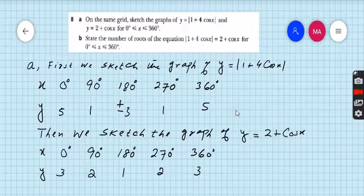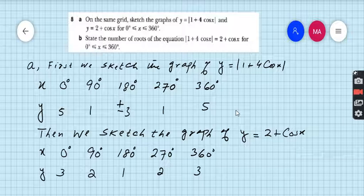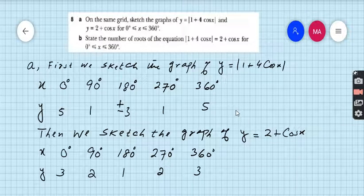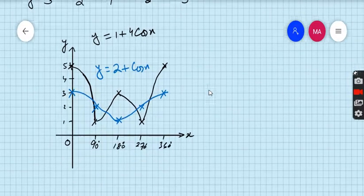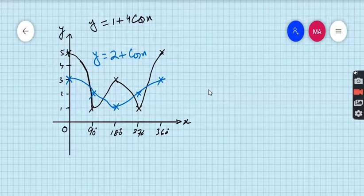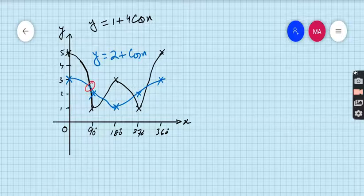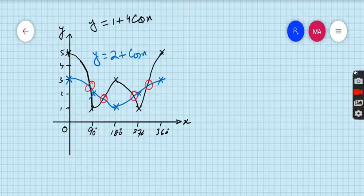What is part b? State the number of roots of the equation 1 plus 4 cos x equals 2 plus cos x for the domain 0 to 360 degrees. So very easy - check at how many points both graphs cut each other. This is the first point, this is the second point, this is the third point, and this is the fourth point.